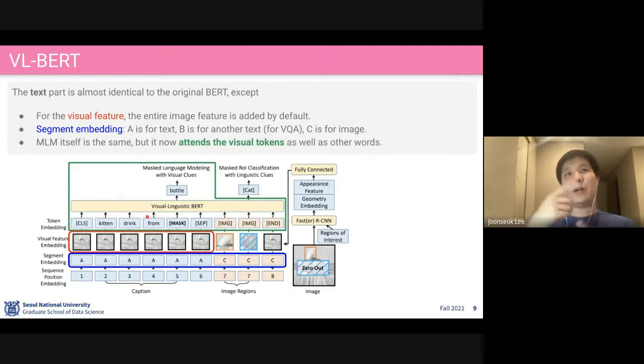These region of interest pooled image tokens are also given as input. When we apply contextualization, you attend not just other words, but also you attend the visual embeddings. And vice versa. That's how we learn the correlation between textual information and visual information together.